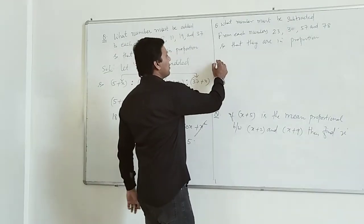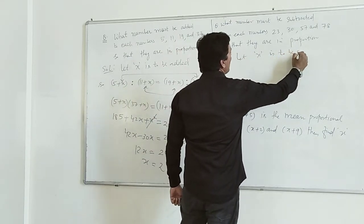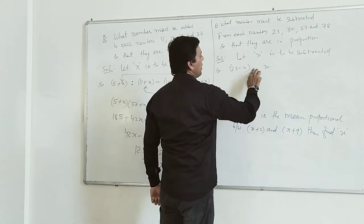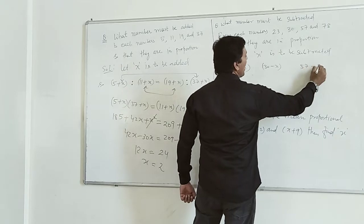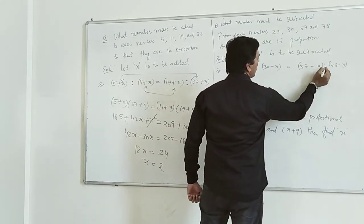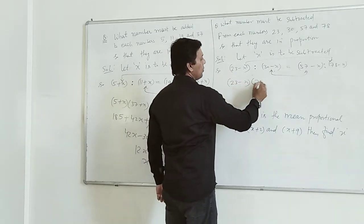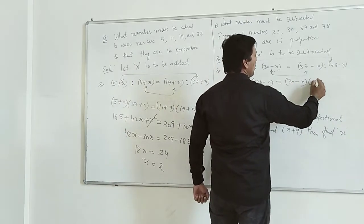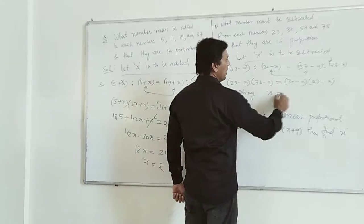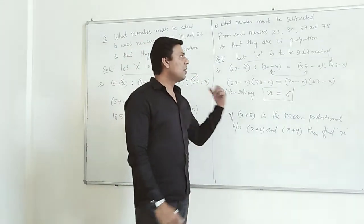Another similar question: X is to be subtracted. So 23−X, 30−X, 57−X, 78−X will be proportional. The product of the extreme terms equals the product of the middle terms: (23−X)(78−X) equals (30−X)(57−X). After solving, X equals 6. So 6 can be subtracted from these four numbers so that they are proportional.